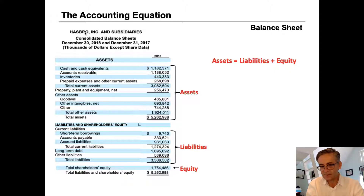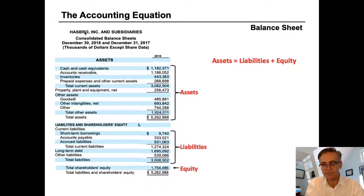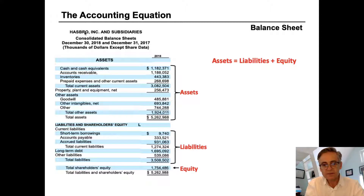We can see that Hasbro's balance sheet begins with assets. Assets are the things that a company owns, and Hasbro lists a variety of assets. This section totals $5.26 billion in total assets. The next two sections show where they got the money to pay for those assets. The first section after assets lists all of their liabilities, which total $3.5 billion. Liabilities are claims against these assets — this is what the company owes to other people and businesses.